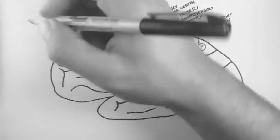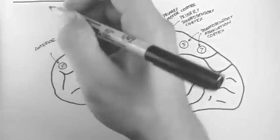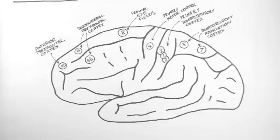Brodman area 10, at the front, is the anterior prefrontal cortex. This is involved in higher cognition.